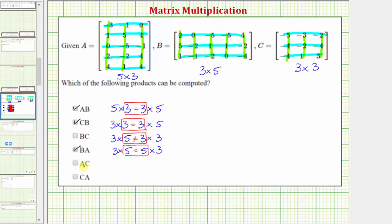Next we have A times C. A is a five by three matrix and C is a three by three matrix. The number of columns in the first matrix equals the number of rows in the second matrix, which means we can compute A times C, and the result of A times C would be a five by three matrix.